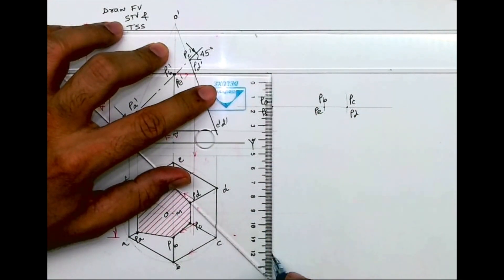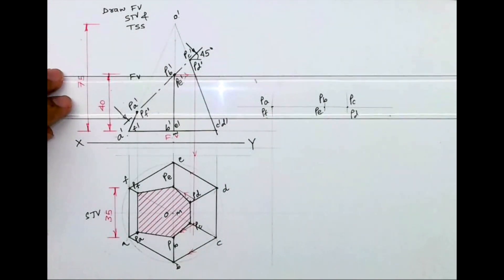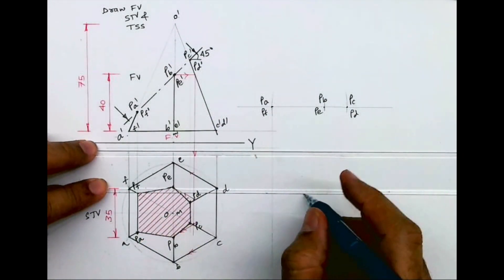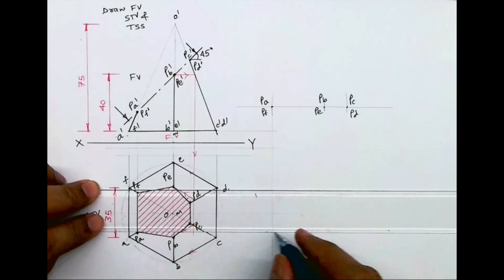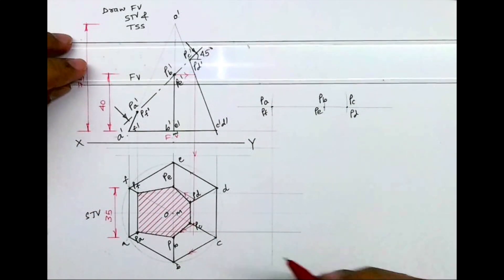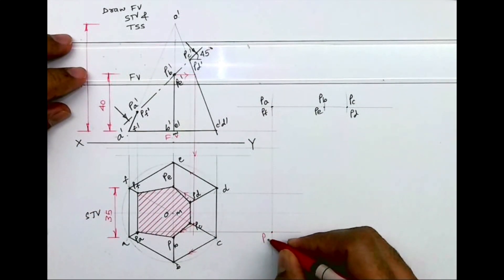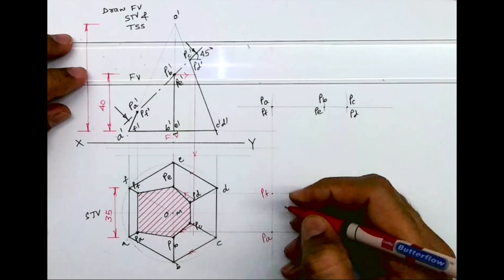Now from here you draw vertical lines. From F and A, you extend the line. See, this PA and PF. Wherever it will intersect with the vertical line, that is PA and PF.